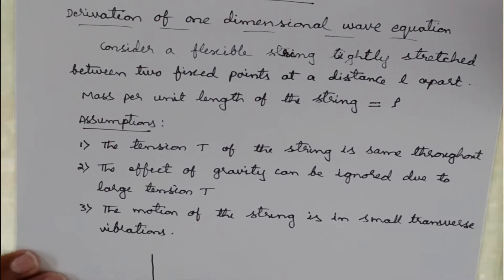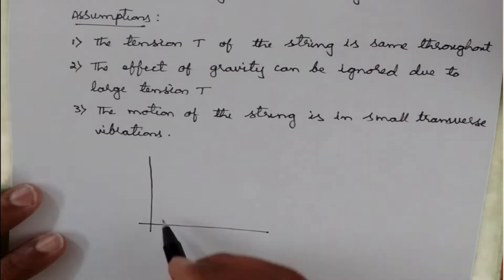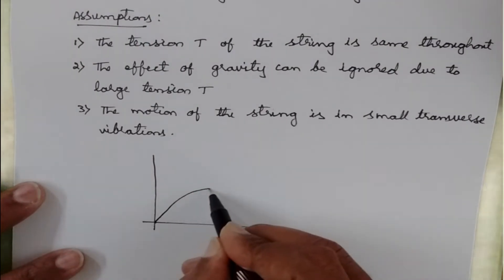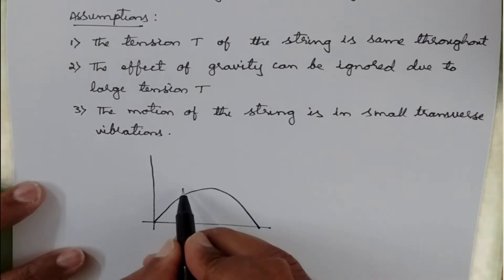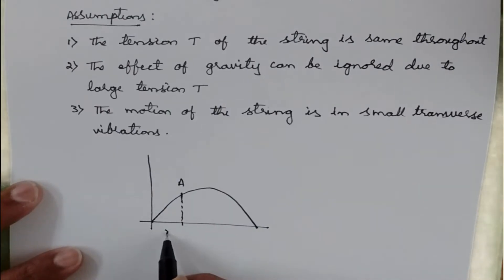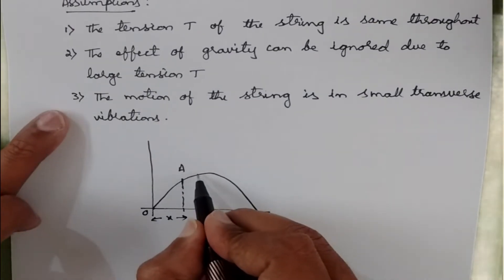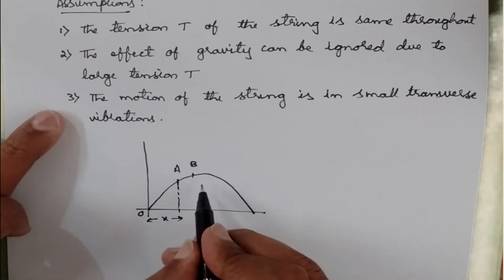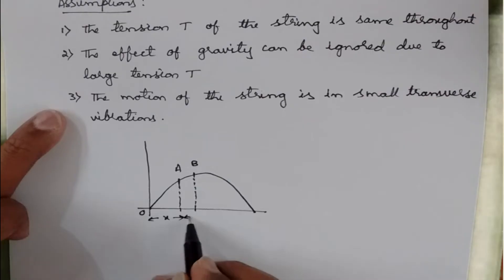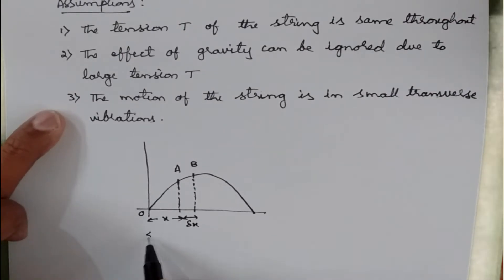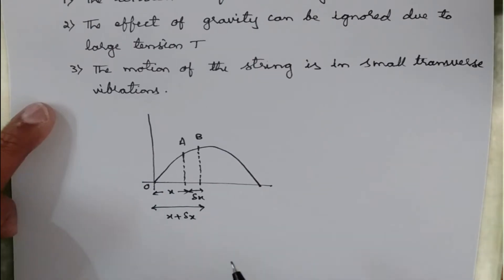Taking the coordinate axis, we consider the wave and take two points: point A on the string at a distance x from the origin, and point B very close to A. Point A is at distance x, and the additional small distance to B is δx, so B is at distance x plus δx from the origin.